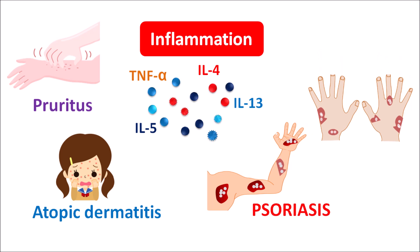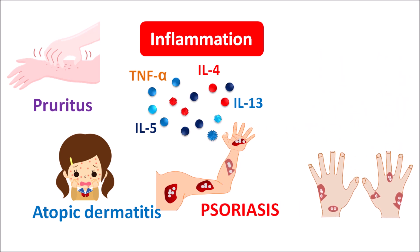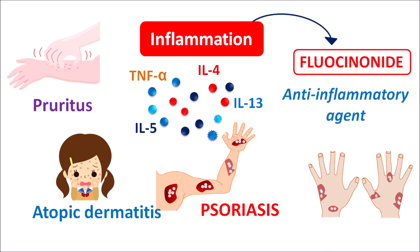To treat this inflammation we can use different types of drugs. Among them, fluocinonide is one of the topical creams indicated for skin inflammatory disorders. This drug acts as an anti-inflammatory agent, so it can be used in conditions like pruritus, atopic dermatitis, and psoriasis.